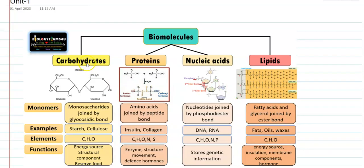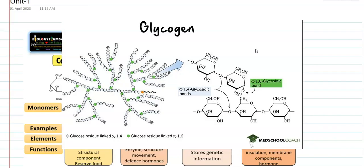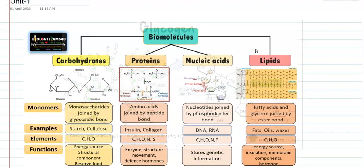Looking at carbohydrates, as already discussed, they contain carbon, hydrogen, and oxygen. The monomers of carbohydrates are commonly referred to as monosaccharides. For example, two glucose units joined together form a maltose molecule. This joining is established with the help of a glycosidic bond. Examples of carbohydrates include starch and cellulose. The function of carbohydrates is mainly to serve as an energy source for a living organism, provide structural components, and excess carbohydrate can be stored inside the body as reserve food — a classic example being glycogen.